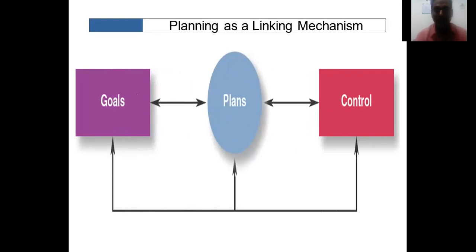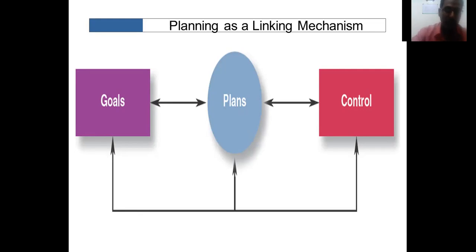Planning acts as a linking mechanism between goals and controls. The organization has a goal, and the plan sits in between — helping to achieve that goal while also enabling control. Control tells you how far you have moved toward the goal, and if there is any deviation, planning helps redirect the organization in the correct direction. This is how goals, plans, and controls are linked.